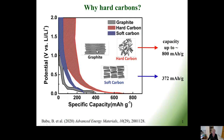Nowadays the state-of-the-art materials for anodes in lithium-ion technology is natural and synthetic graphite, due to its low working potential, quite high reversible capacity, and cycling stability.